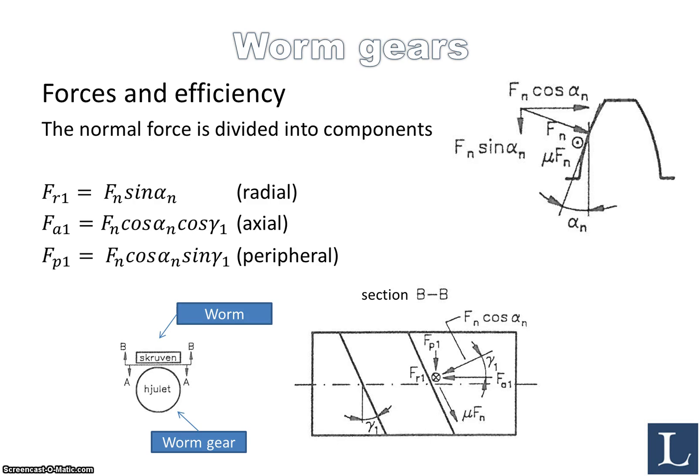When it comes to the forces and the normal force acting on the gear tooth, you see it right here, Fn is divided into components as we did previously for the bevel gears. So we have the radial force, the axial force, and the peripheral force, and these are coupled to the normal force using alpha_n, which is the pressure angle shown right here, and gamma_1. These schematics show section BB, which is the worm in this case, where we can find these equations to describe the forces and the components for the worm.